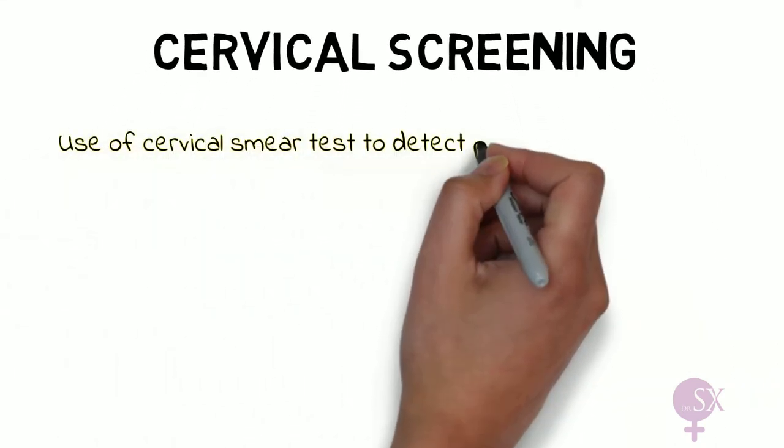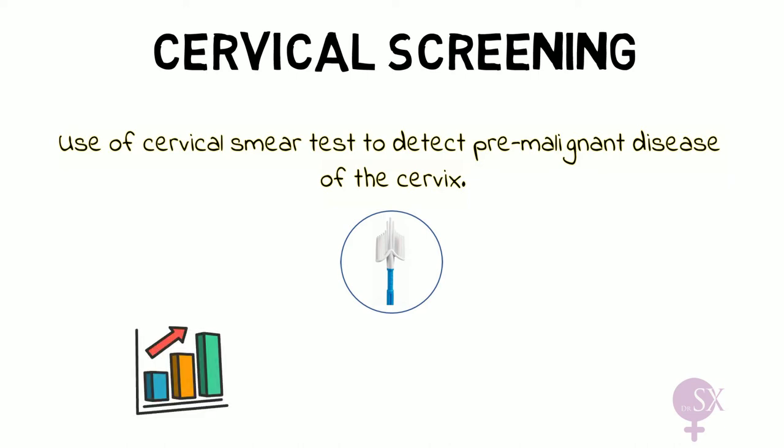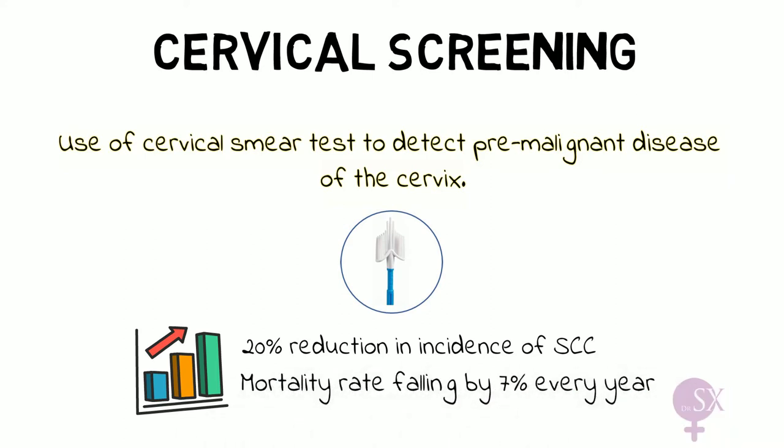This is the third video from my cervical series, and in this video we're talking about cervical screening. Cervical screening refers to the use of a cervical smear test to detect pre-malignant disease of the cervix. This is a national program set up to reduce the incidence, morbidity and mortality associated with cervical cancer. Since cervical screening programs have been set up, the UK has noticed a 20% decrease in the incidence of squamous cell carcinoma of the cervix, as well as a decreasing mortality rate by 7% every year.